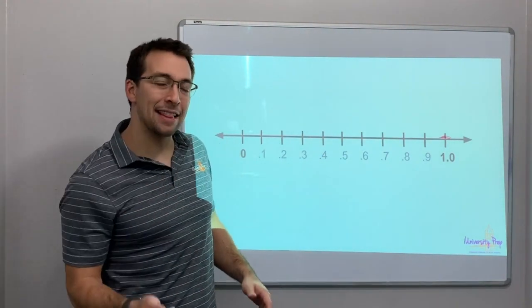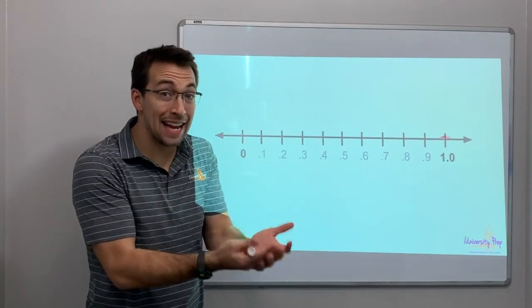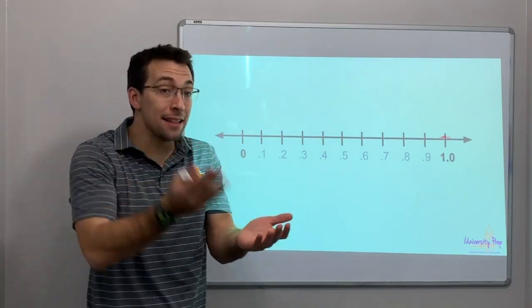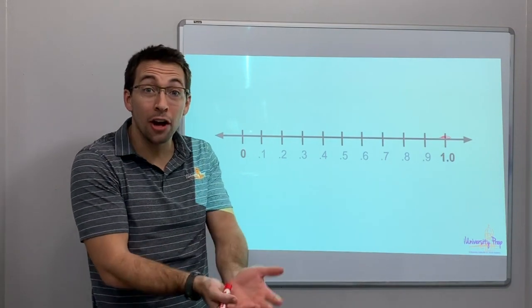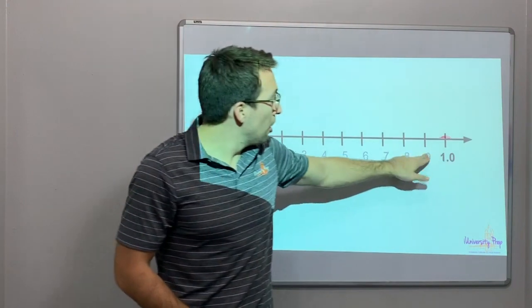What happens after 0.9? If you have 9 tenths, if you add 1 tenth to 9 tenths, if you have 9 dimes and you add a 10th dime, what do you get? You have $1. You went from 90 cents to $1.